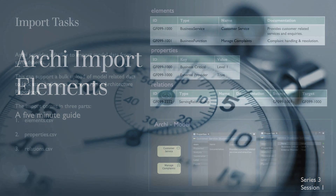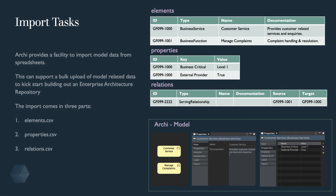There are three files available to import and export model data. They are elements, properties, and relations. The first file we need to upload is the elements file. It is structured with ID, type, name, and documentation, shown here with example data.